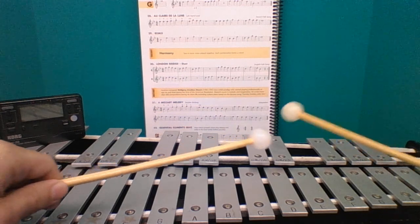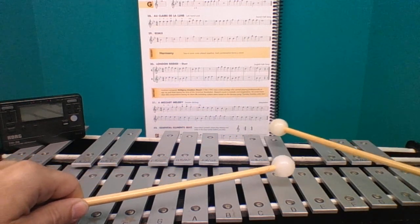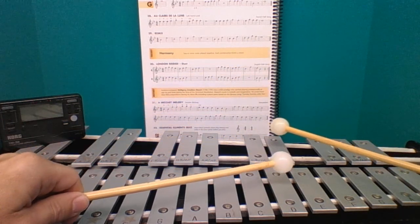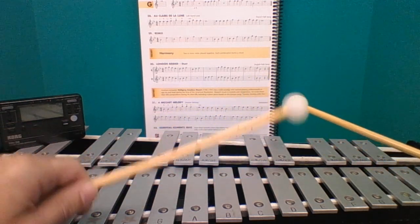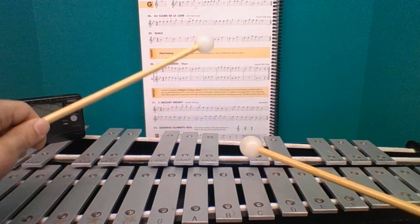After we play the first two measures, the right hand moves to the E flat and the left hand on the D, and we're just moving down through the notes we've learned previously: E flat E flat D D C C B flat.